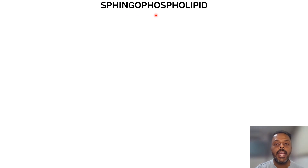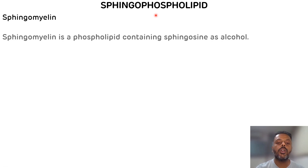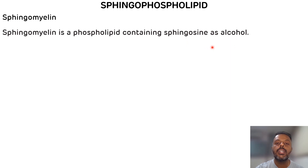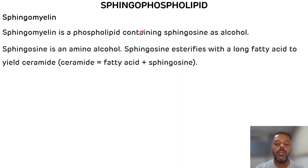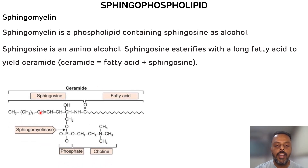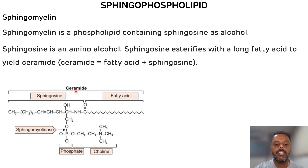That is all about glycerophospholipids which contain glycerol as an alcohol. The second type of phospholipid is sphingophospholipid, which contains sphingosine as an alcohol. Sphingosine is basically an amino alcohol. The only example of sphingophospholipid is sphingomyelin. Sphingosine esterifies with a long-chain fatty acid to produce ceramide. Ceramide is basically fatty acid and sphingosine. The sphingomyelinase enzyme plays an important role in the release of ceramide.